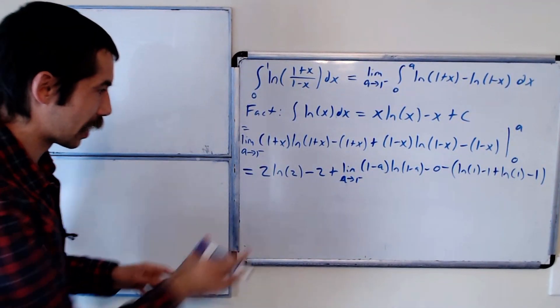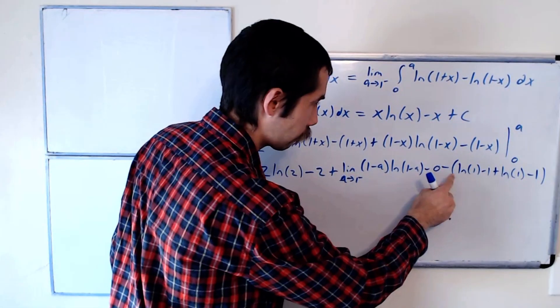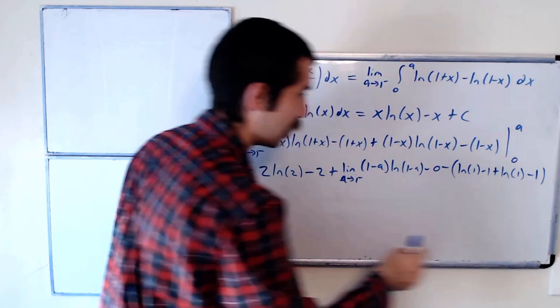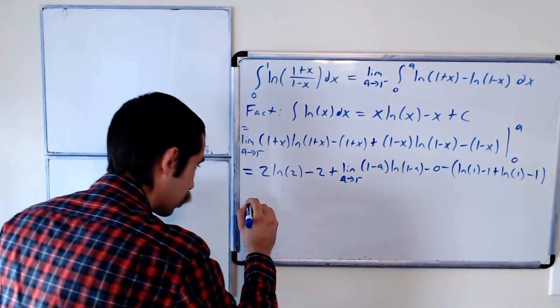Let's cancel out as much as we can. 2 ln of 2 will stay the same. Minus 2, minus 1, minus 1, those all cancel. And then all these ln of 1s are 0.